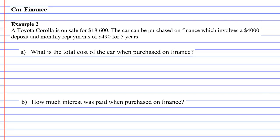Okay, we're on to example two now, and this is quite a real-life car finance question. It says that a Toyota Corolla is on sale for $18,600. The car can be purchased on finance, which involves a $4,000 deposit and monthly repayments of $490 for five years.